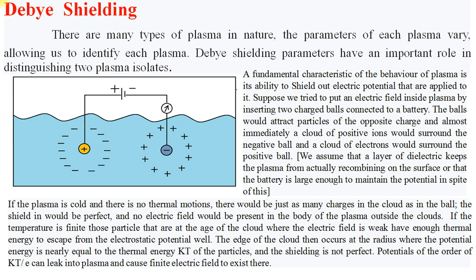Suppose we tried to put an electric field inside plasma by inserting two charged balls connected to a battery. The balls would attract particles of the opposite charge, and almost immediately a cloud of positive ions would surround the negative ball and a cloud of electrons would surround the positive ball. We assume that a layer of dielectric keeps the plasma from recombining on the surface. If the plasma is cold and there is no thermal motion, then there would be just as many charges in the cloud as in the ball, the shielding would be perfect, and no electric field would be present in the body of the plasma outside the clouds.